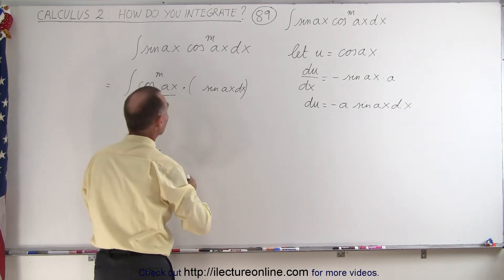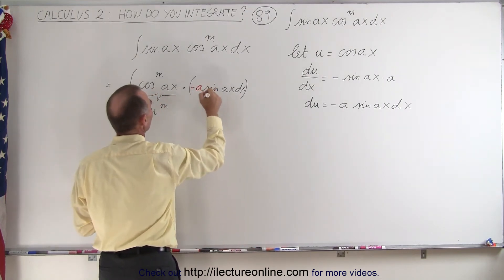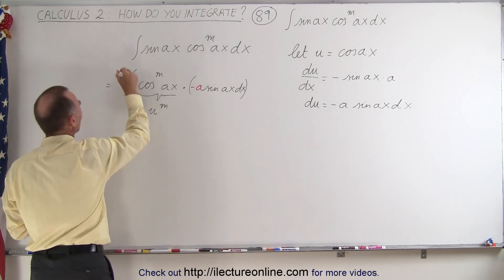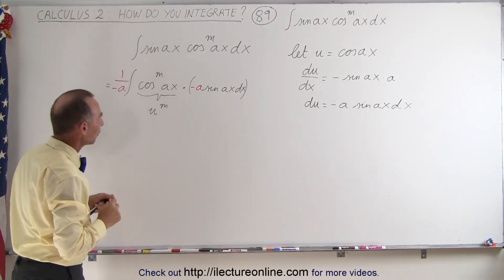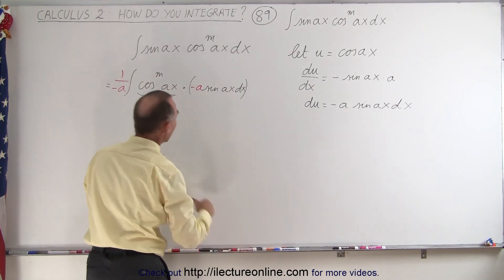Let me use a different color. So we have to write this as minus a, and of course if we multiply this times a minus a, we also have to divide by a minus a. Now we're ready, because this is now the du.